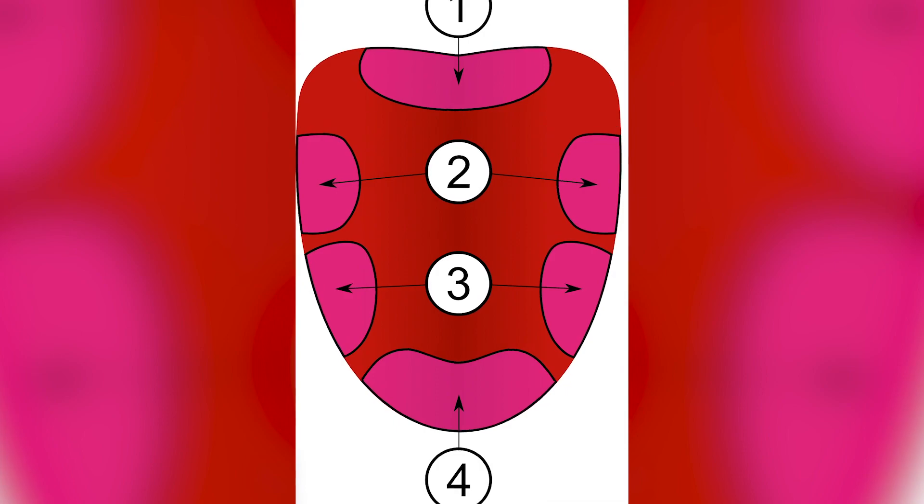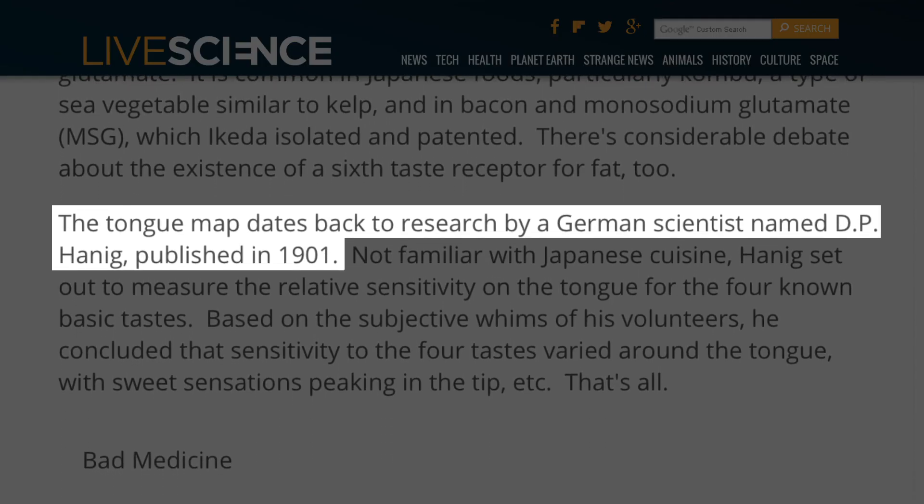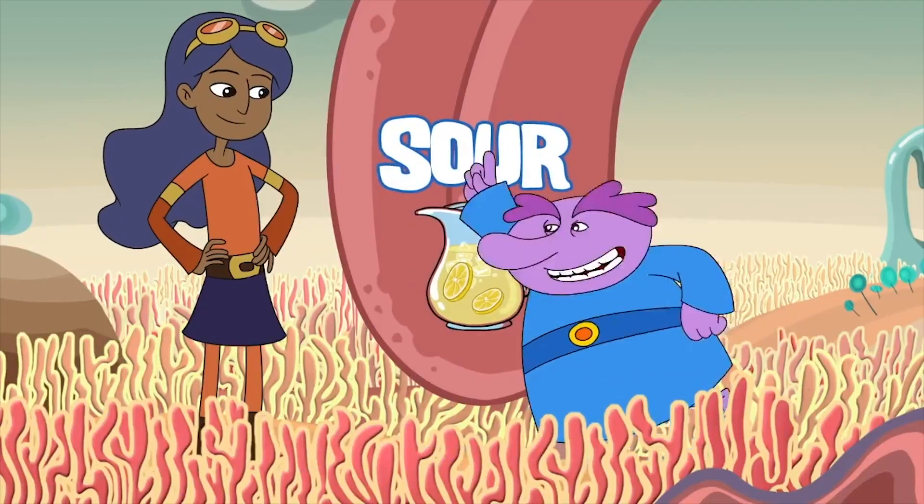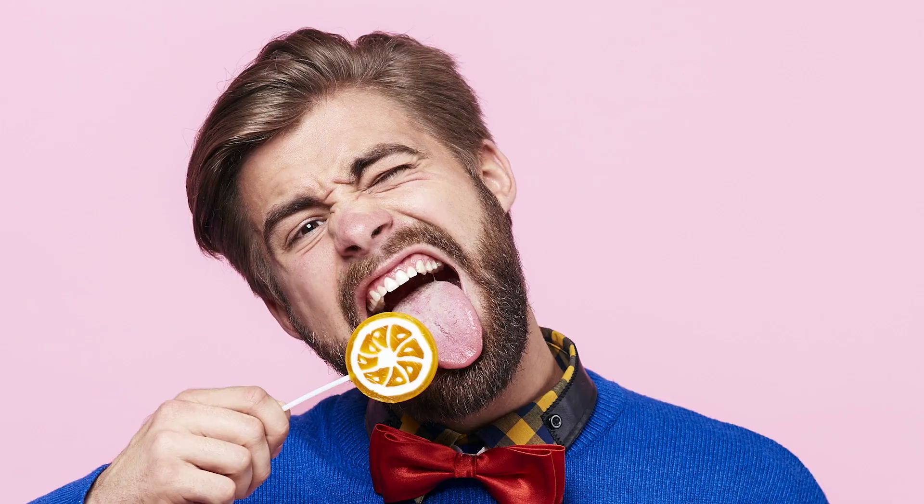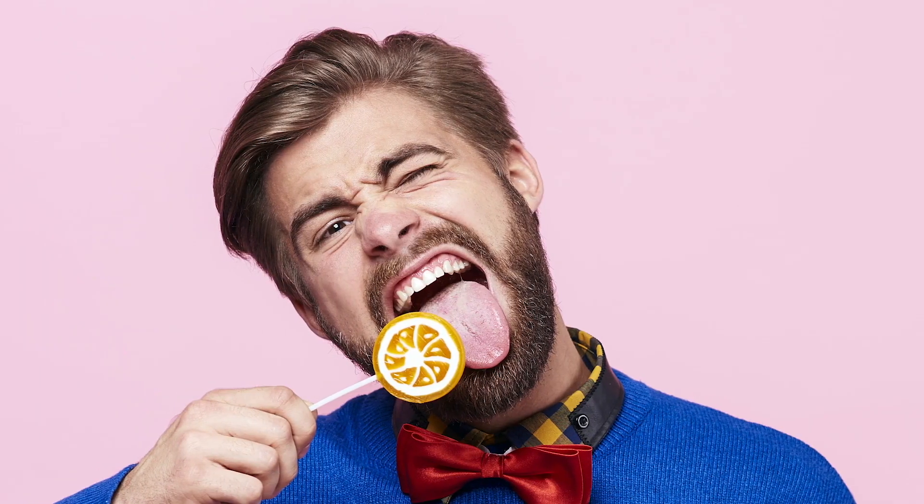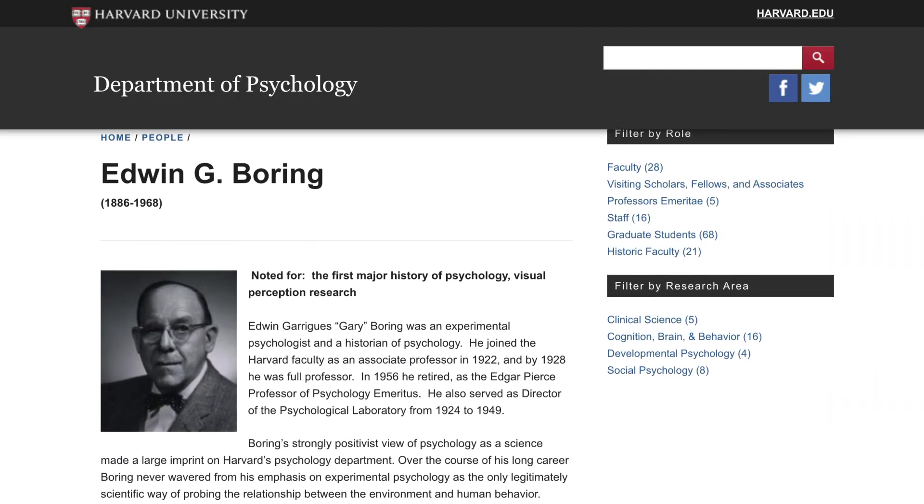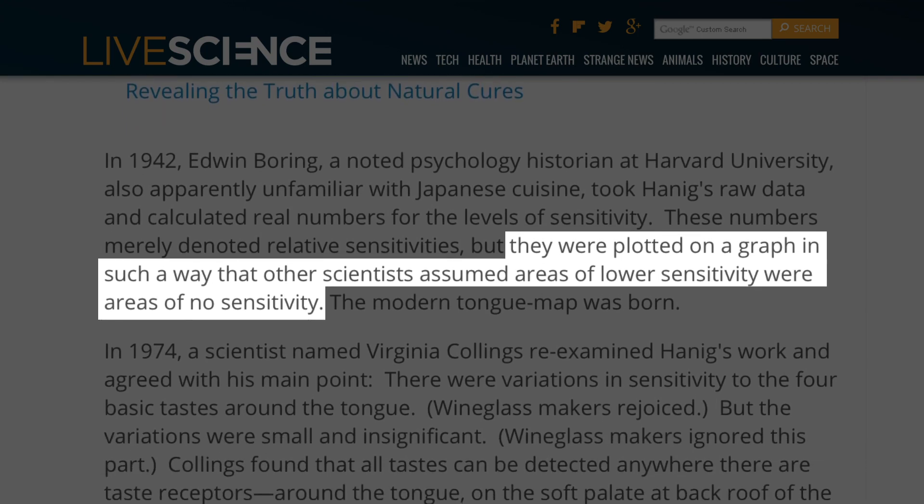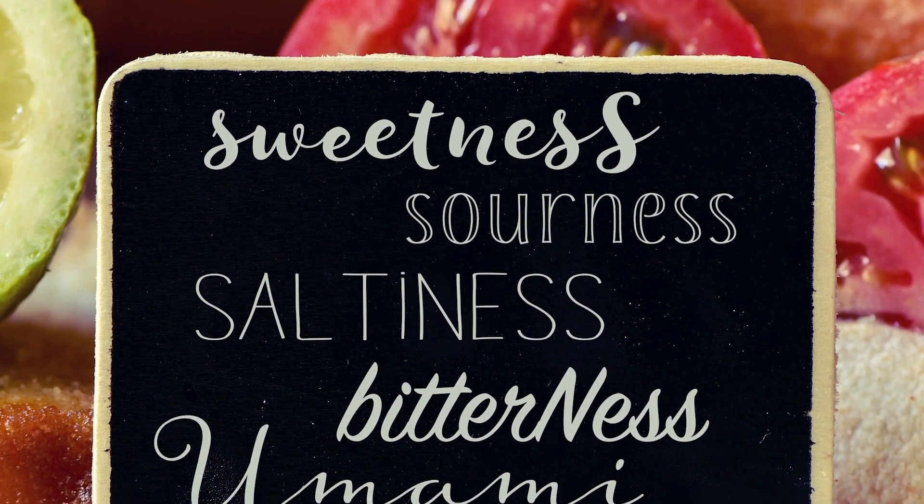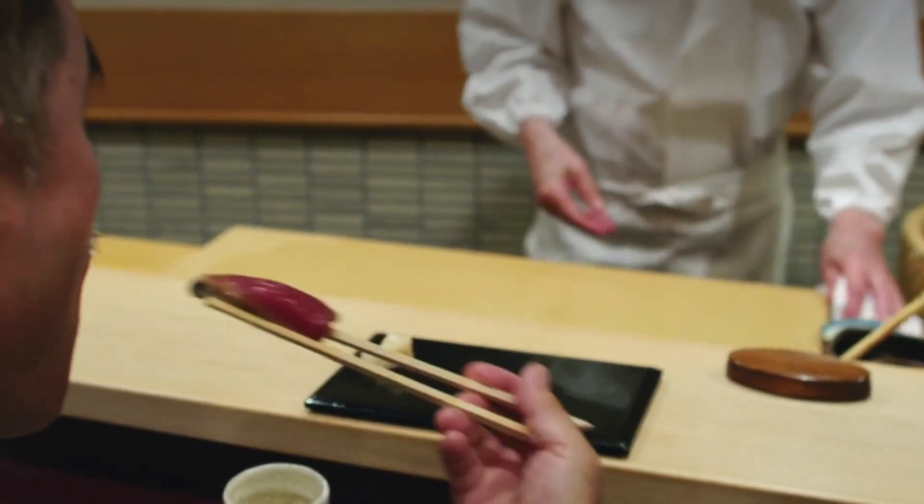The tongue map dates back to 1901, and according to Live Science, it was the work of a German scientist named D.P. Honig. He was measuring how sensitive certain areas of the tongue were to certain tastes, and later that turned into the idea that different parts of the tongue only taste certain things. We even know who screwed things up — a Harvard psychology historian with the epic name of Edwin Boring. He transcribed Honig's data in 1942, but didn't label his graph correctly. It's wrong for another reason, too, because we also have the ability to taste something called umami. That's not even on the standard tongue map.